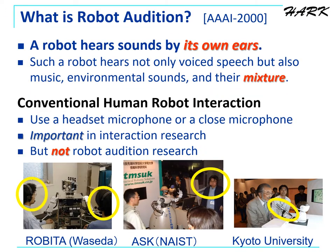What is robot audition? Robot audition was proposed by Dr. Nakadai and colleagues at AAAI 2000. Its definition is very simple: a robot hears sound by its own ears, and therefore hears general sound and their mixtures. Conventional human-robot interaction usually used a headset microphone, which is critical to avoid errors in capturing target speech. However, this approach is not directly related to robot audition.